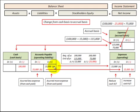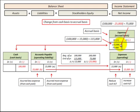Looking at our accounts payable: if it increased by $15,000 during the year, that means our expenses would have also increased by $15,000. So we take our cash basis of $100,000 and add that increase of $15,000 in our expense, and we get $115,000 expense on the accrual basis.